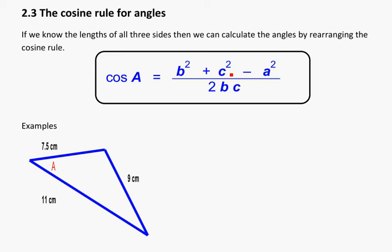Okay, so taking a look at our next section in the notes, we're going to be learning about how to use the cosine rule for angles. So last time was the cosine rule for finding the side of a triangle, and now we're going to figure out how to use that same rule to find the angle if we don't know it.